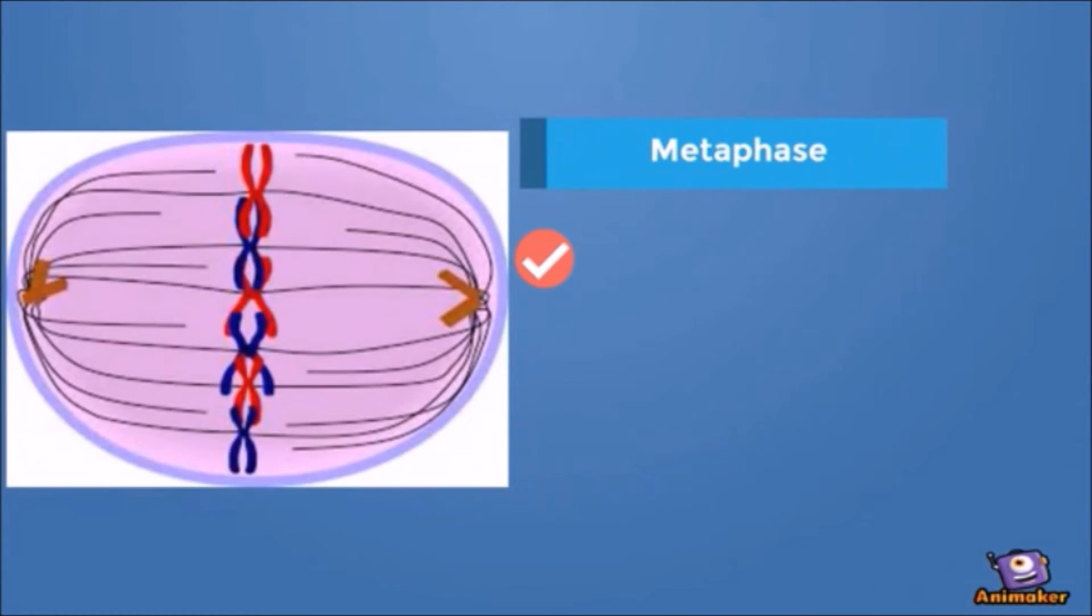The next phase is metaphase, where chromosomes line up along the equatorial plate and spindle fibers start to emerge.